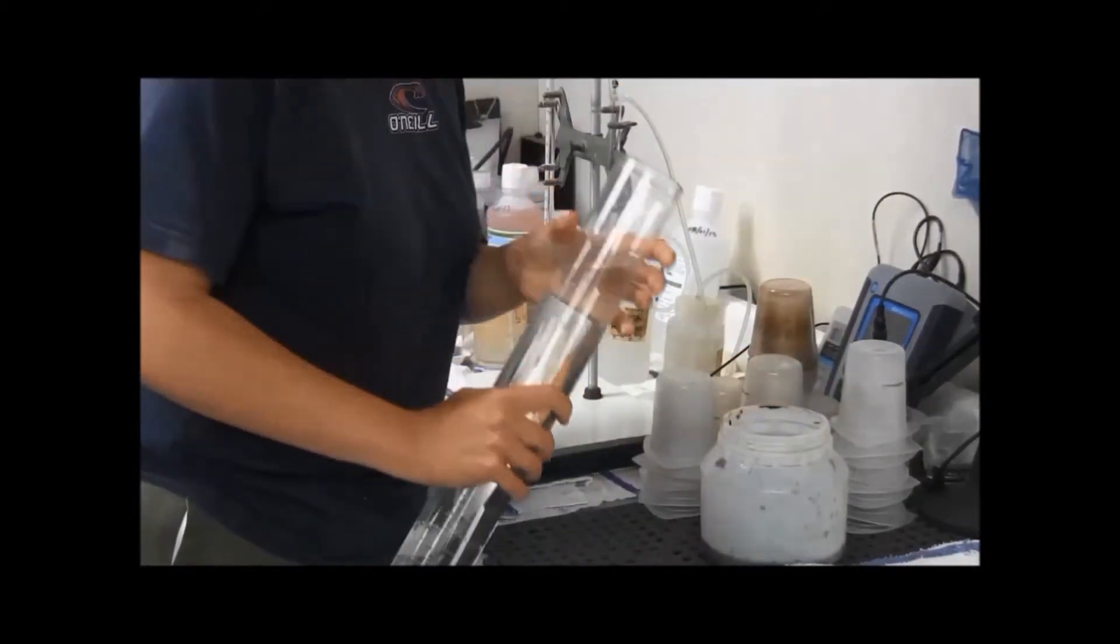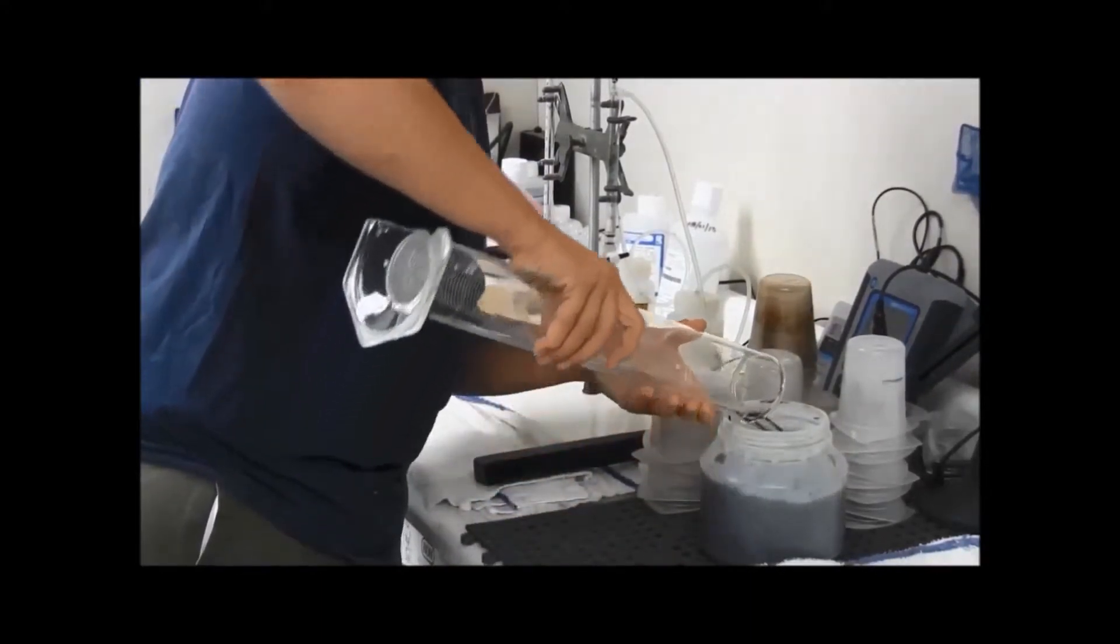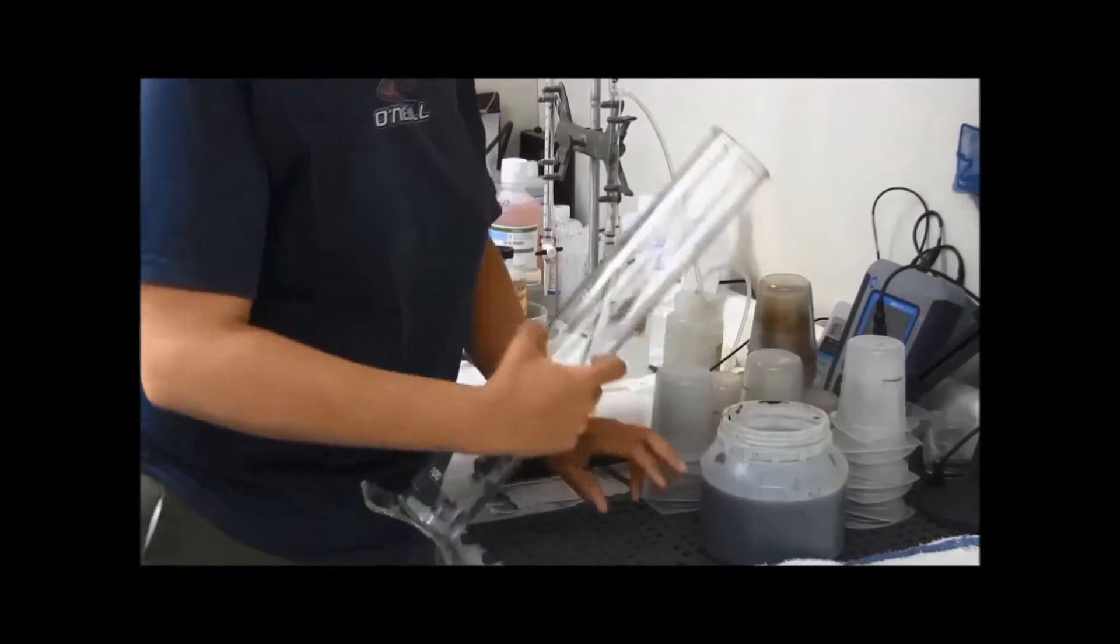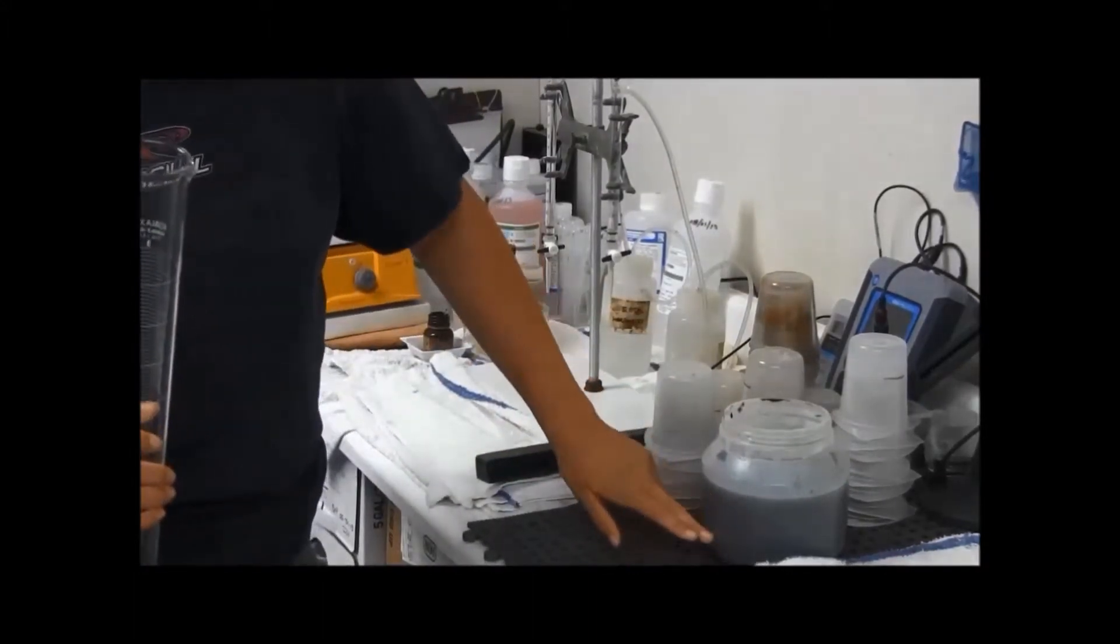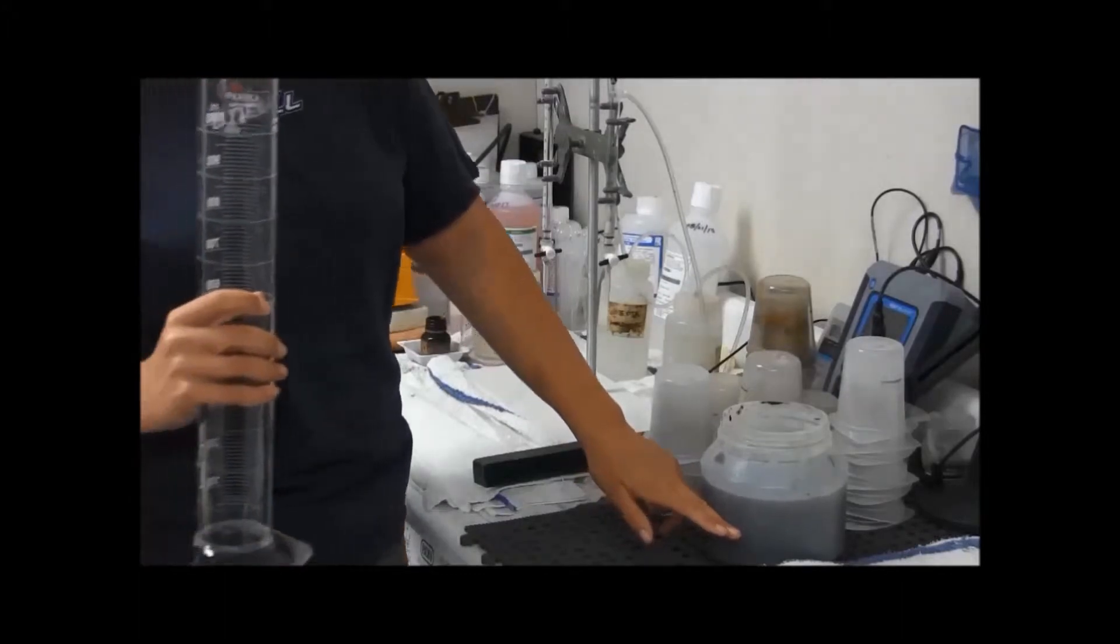Now, you always want to make sure that all of the organic material and the bugs are no more than halfway full in this container. Otherwise, it will continue to dilute with all the organic material, like if you have a lot of algae in it. So you'll just want to make sure that it's right at half.